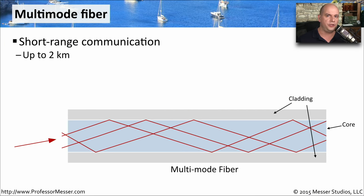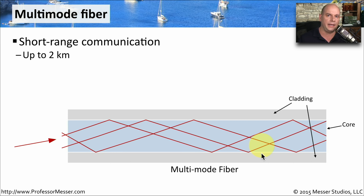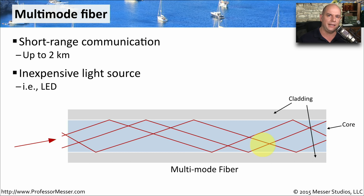For short-range communication with fiber optics — distances up to about two kilometers — we generally use multi-mode fiber. It's called multi-mode because when we put the light into the fiber, it tends to bounce around and hit the sides of the fiber, entering in different modes. You can see three different light sources here, each bouncing a little differently in those multiple modes. We usually have an inexpensive light source like LEDs, and by using multi-mode fiber we can keep the cost down.